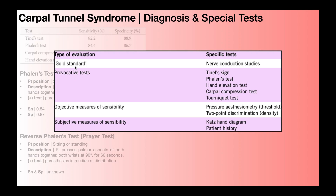The gold standard for diagnosing carpal tunnel syndrome is a nerve conduction study. The basic idea is there's a normal range for the velocity of nerve conduction at different points along the upper extremity, including across the carpal tunnel. They measure the velocity of conduction across the carpal tunnel, and if it's lower by a certain amount, they can diagnose the person with carpal tunnel syndrome.